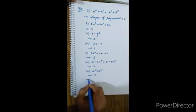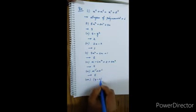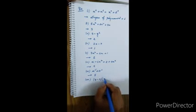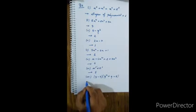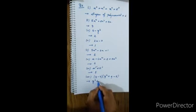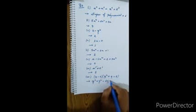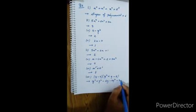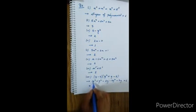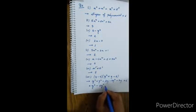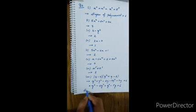Roman numeral 8: (y minus 3)(y cubed plus y minus 2). Expanding: y to the power of 4 plus y squared minus 2y minus 3y cubed minus 3y plus 6, giving y to the power of 4 minus 3y cubed plus y squared minus 5y plus 6. The degree of this polynomial is 4.